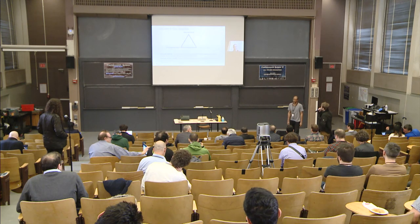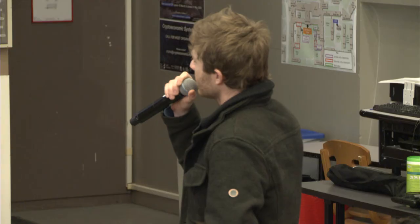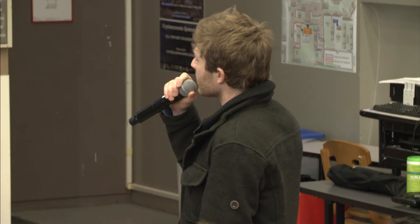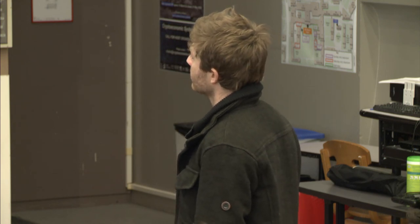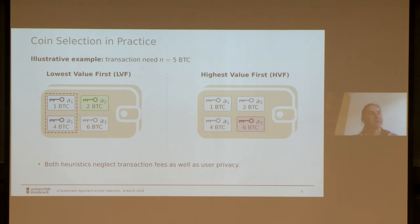Hi. Great talk. I'm wondering — if you go with highest value first, is there a tendency for dust outputs to be produced? It seems like you're breaking up outputs so they get smaller and smaller, and at some point the fee would be more than the output is worth to move. You could lose the whole output in a sense. Yes — lowest value first and highest value first are not optimal and will produce some dust outputs if you take a longer time horizon into account. Both heuristics are the most basic ones, and in our model the highest value first does perform better than lowest value first.